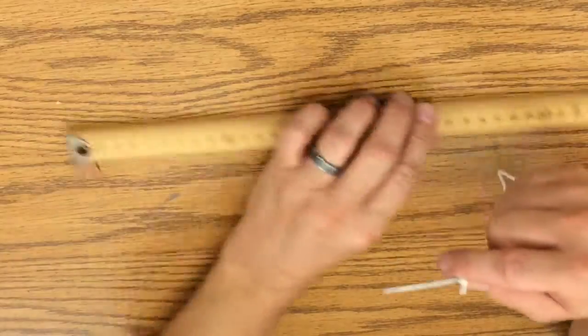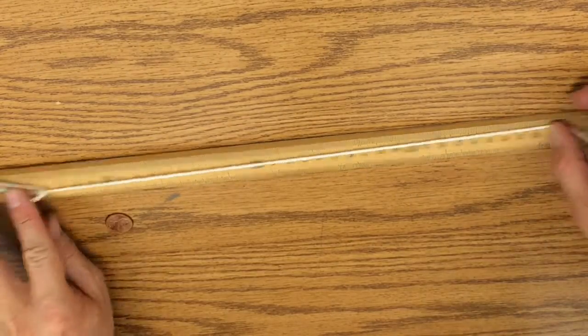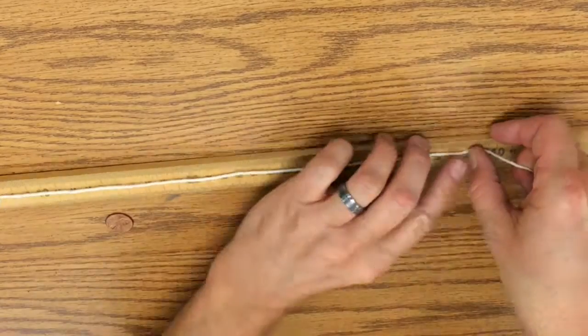Then, measure exactly 38 cm from the tip of the paper clip along the string. Fold the string back at exactly the 38 cm mark.